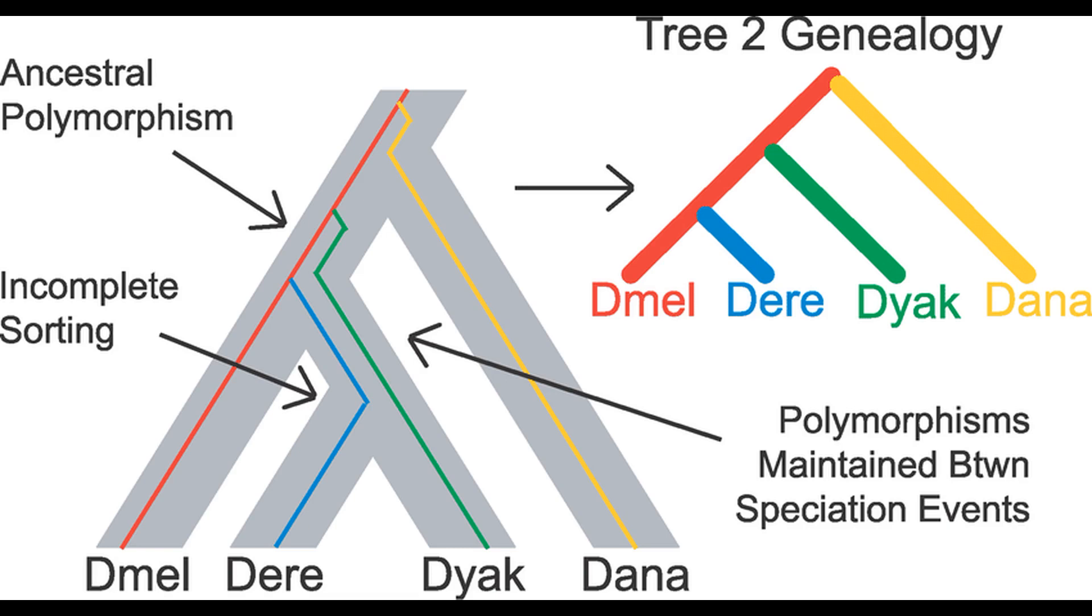Hello everyone, today we're continuing our deep dive of Richard Dawkins and Yan Wong's book, The Ancestor's Tale. In this episode, we're going to discuss incomplete lineage sorting, so let's jump right in.